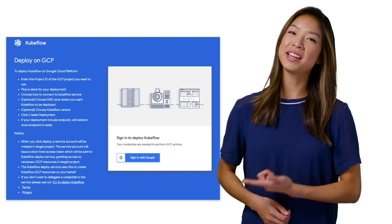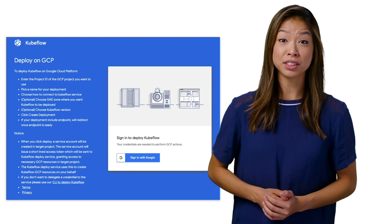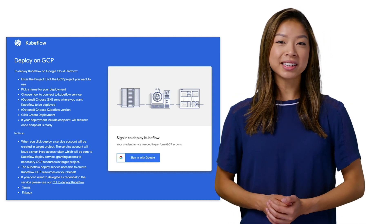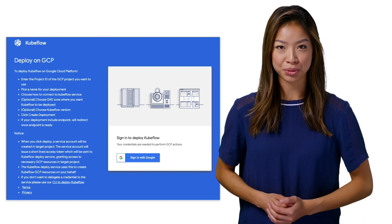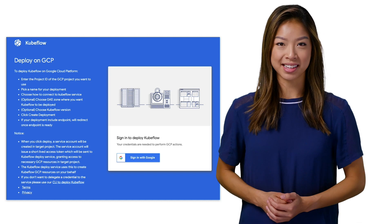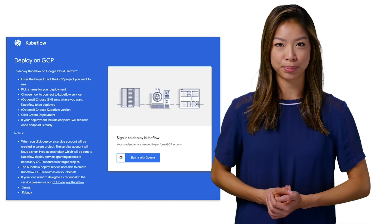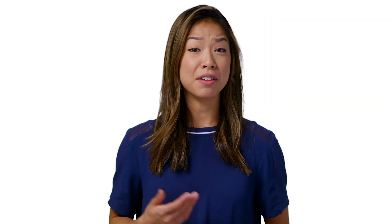We'll go with a GUI option and use the Google Cloud Deployer. This quick form can get you quickly set up with Kubeflow after just filling out some information. Once we click the Sign In with Google button, we'll be prompted for some access, since Kubeflow will be deploying resources to our Google Cloud project. If you don't want to use this web deployer, check out that link below for other ways to deploy.